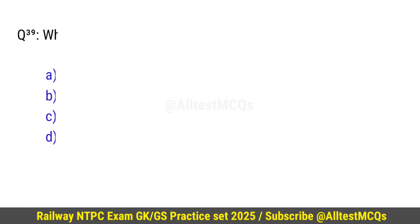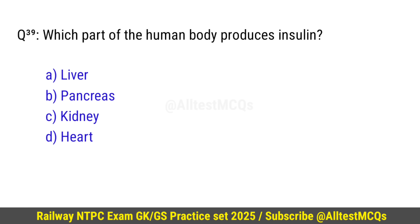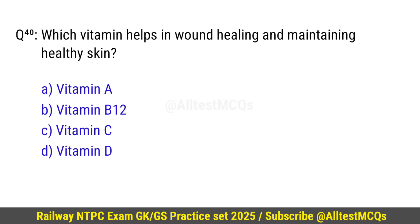Question number 39: Which part of the human body produces insulin? Right option is B — Pancreas. Question number 40: Which vitamin helps in wound healing and maintaining healthy skin? Correct option is C — Vitamin C.